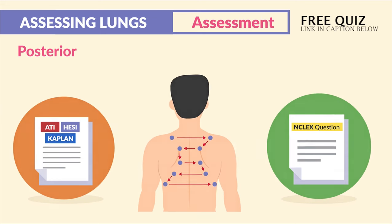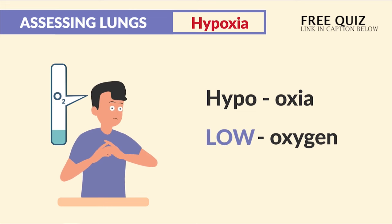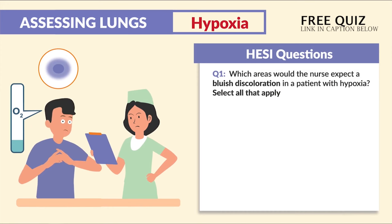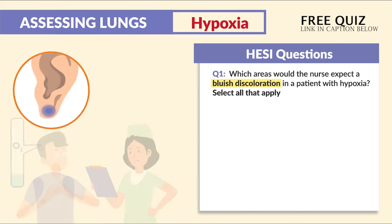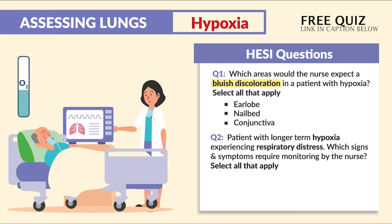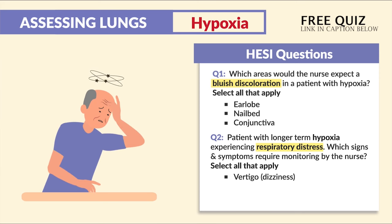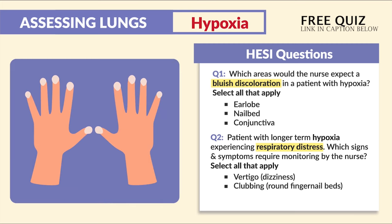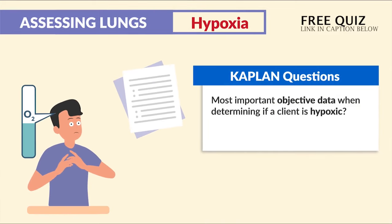A top-missed key point is hypoxia — hypo meaning low, oxia meaning oxygen, so low oxygen. HESI mentions that the areas where a nurse would expect blue discoloration in a patient with hypoxia — called cyanosis — are the earlobe, nail bed, and conjunctiva of the eye. Signs and symptoms of long-term hypoxia to monitor include vertigo, mental status changes, clubbing or rounded fingernail beds, and increased pulse rate known as tachycardia.